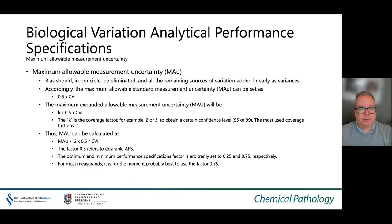Biological variation can also be used to set the maximum allowable measurement uncertainty. In this case, bias should in principle be eliminated and all remaining sources of variation added as variances. Accordingly, the maximum allowable standard measurement uncertainty can then be set as 0.5 times CVI. The maximum expanded allowable measurement uncertainty will be K multiplied by 0.5 multiplied by CVI, where K is the coverage factor — for example, 2 or 3 to obtain a confidence interval of 95% or 99%.